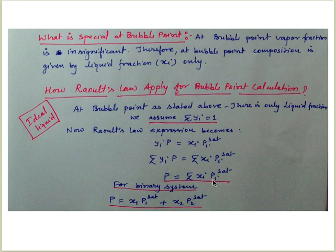For a binary system with two components, this becomes P equal to x1*P1_sat plus x2*P2_sat.